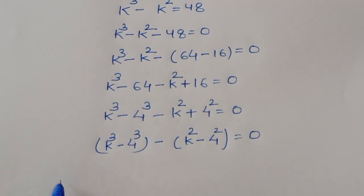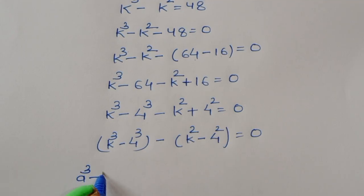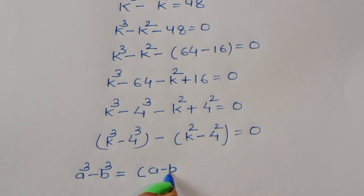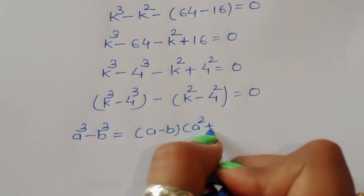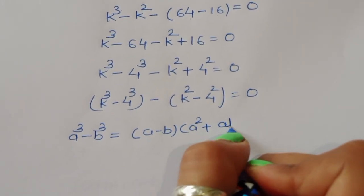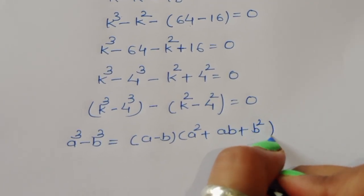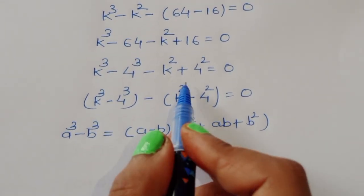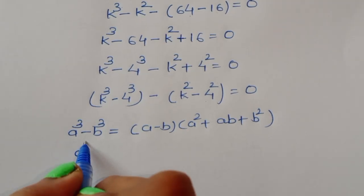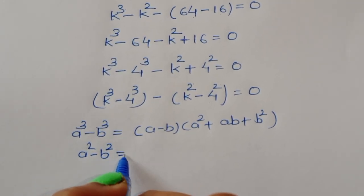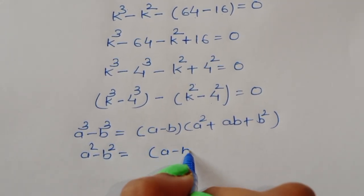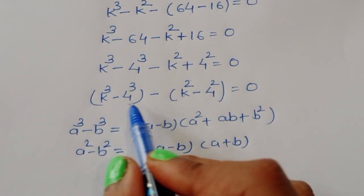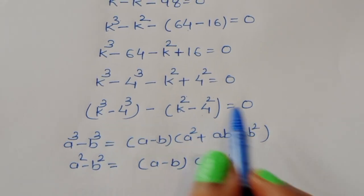We apply two formulas: the first is a cubed minus b cubed equals (a minus b)(a squared plus ab plus b squared), and the second is a squared minus b squared equals (a minus b)(a plus b). We will apply both of these formulas to factor the expression.